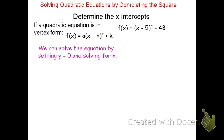Let's take a look at our example here. Here we have f(x) = (x - 5)² - 48. To solve this problem, we'll begin by setting f(x) equal to 0. We'll then move the 48 to the other side by adding 48 to both sides. This isolates the quantity (x - 5)².